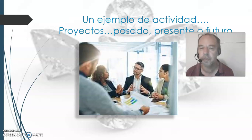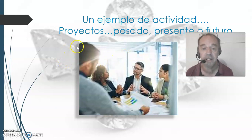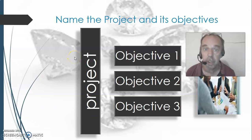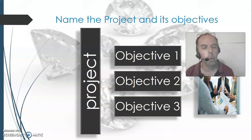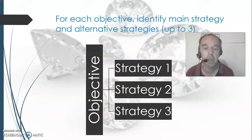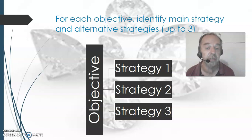Let's talk about an example of an activity we might do during these courses: projects — past, present, and future. One of the assignments I might give you would be to talk about a project in your company — the objectives of this project, from one to three different objectives. You would also talk about the strategy that you might use for each of these objectives.